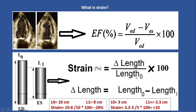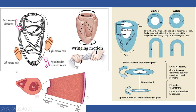Now let's see another example for radial strain. Imagine a segment where at end-diastole the thickness is 10 mm, and at end-systole it becomes 14 mm. The amount of radial strain will be 40%. Since the number is increasing, the unit will be positive 40%.